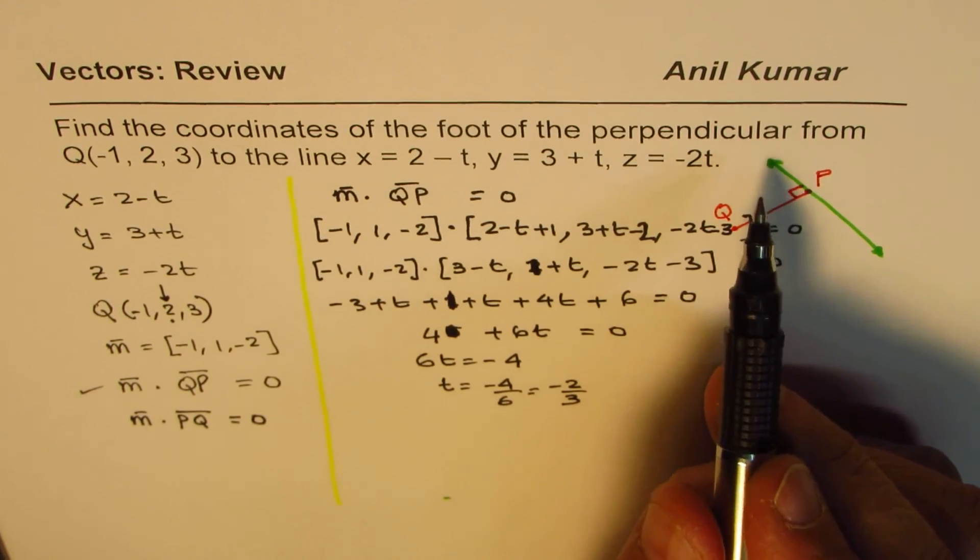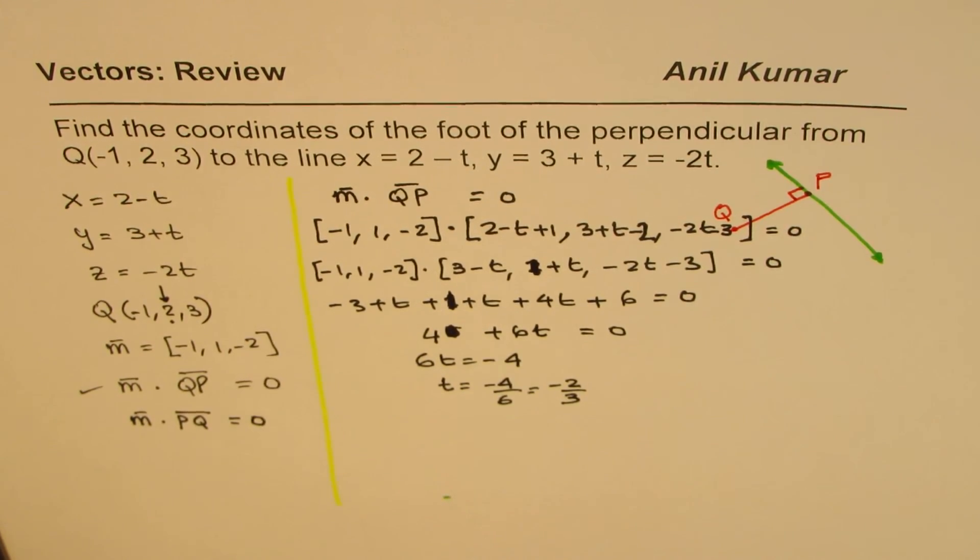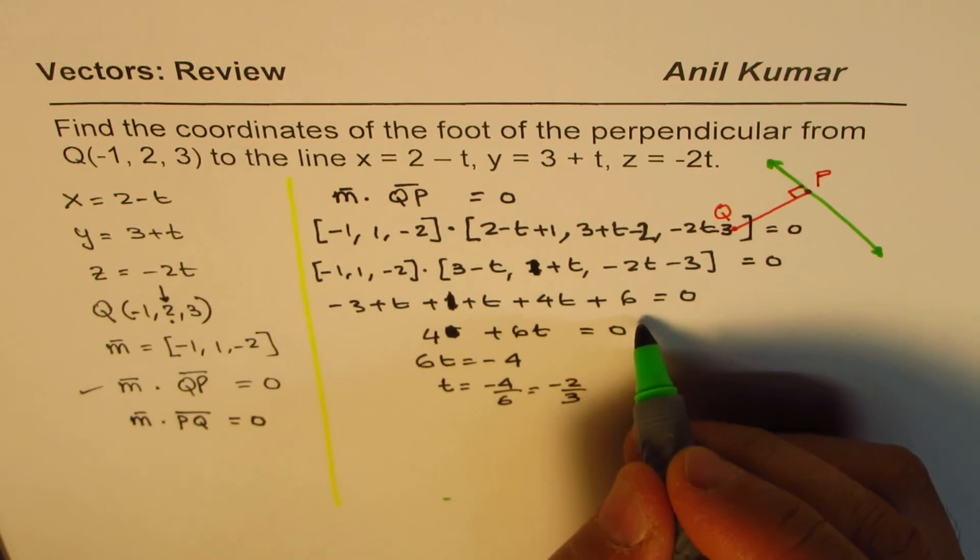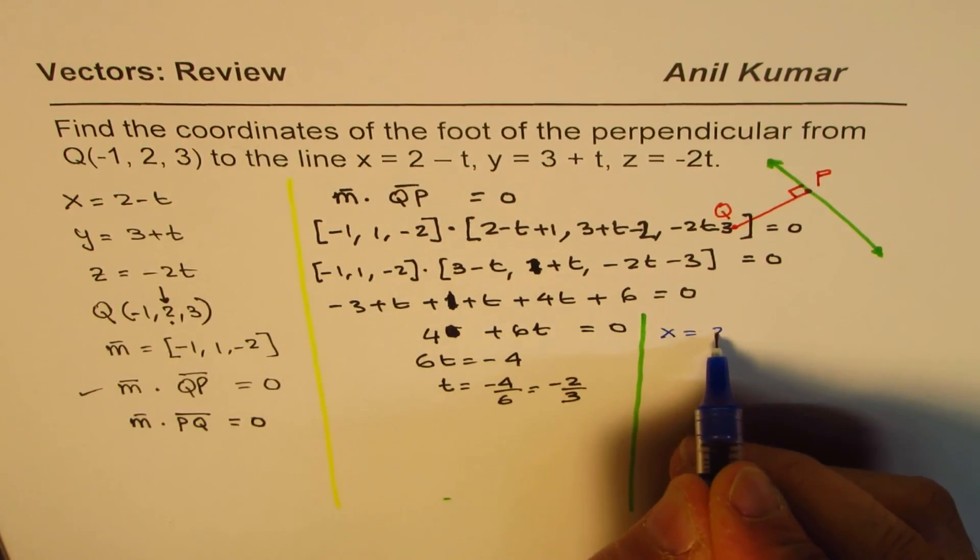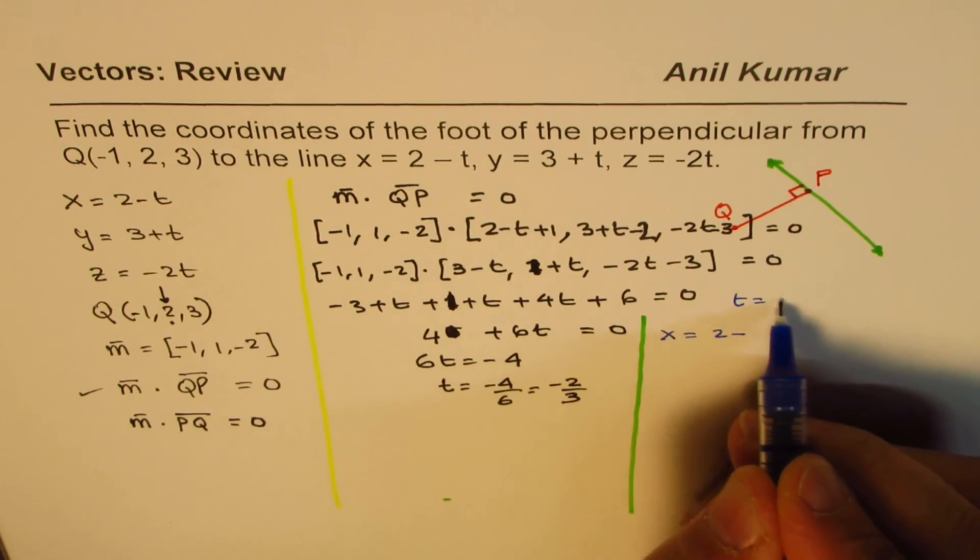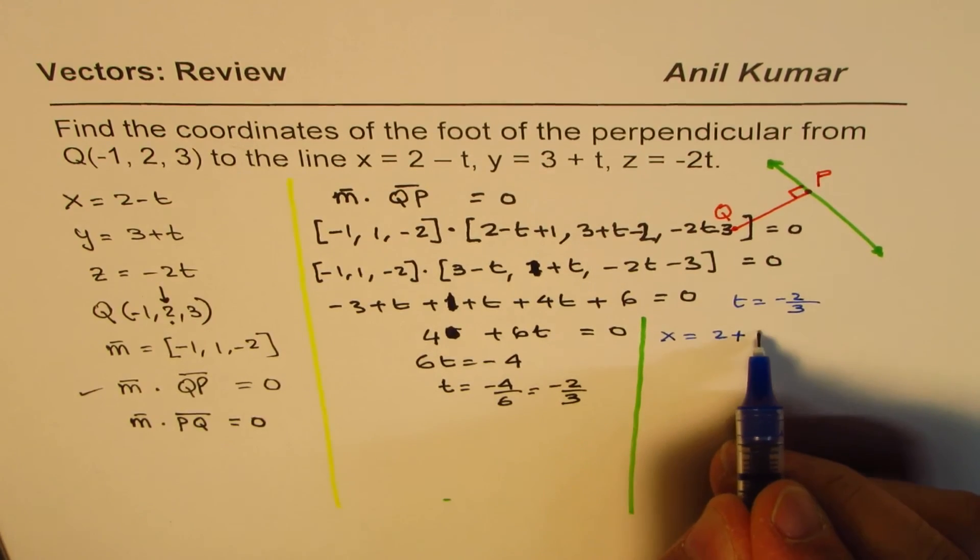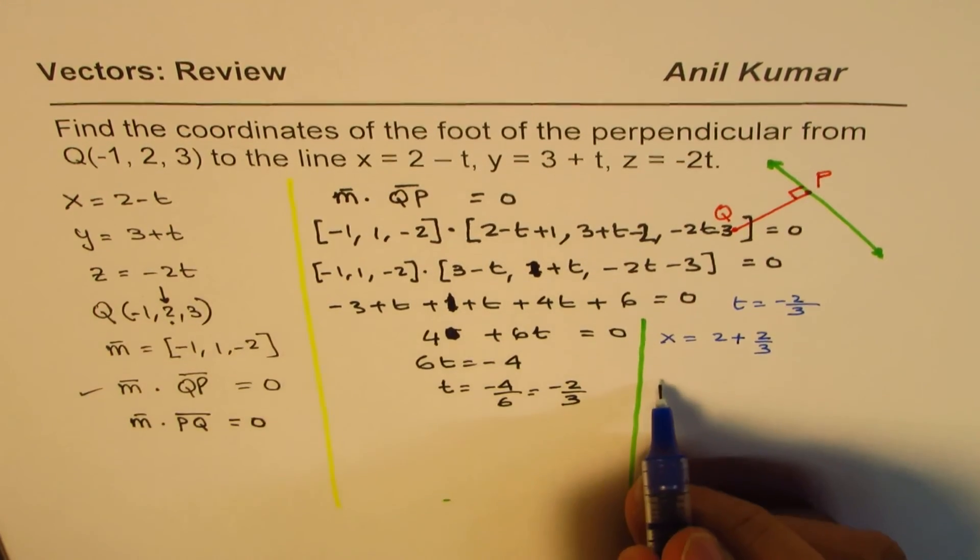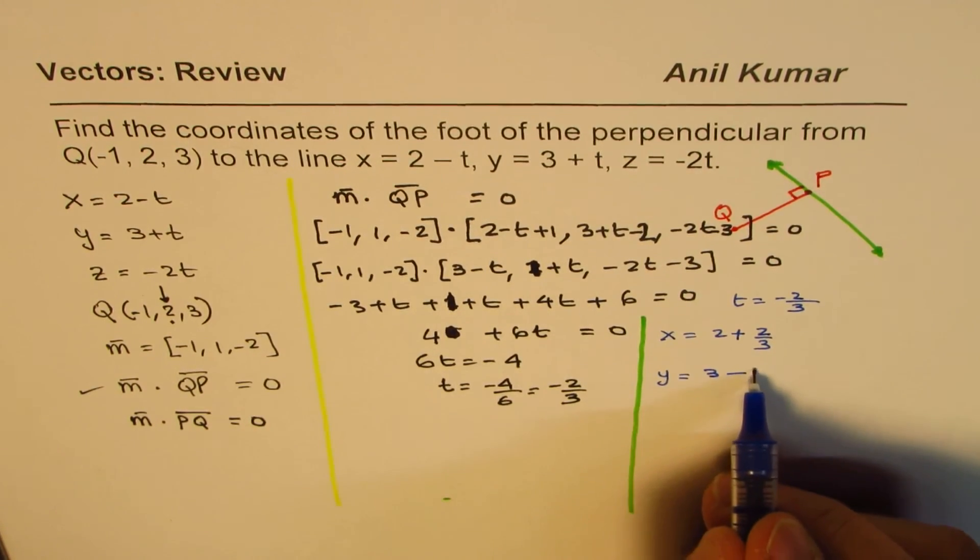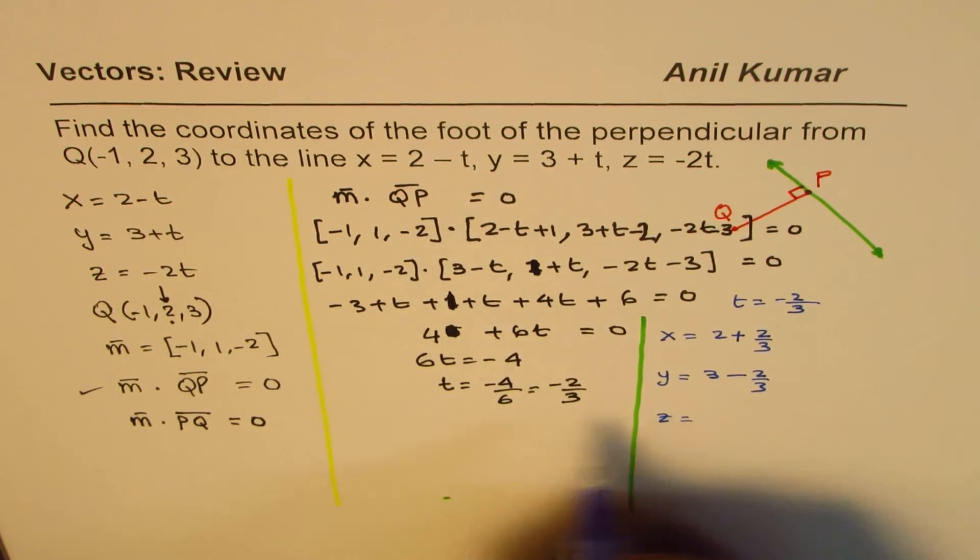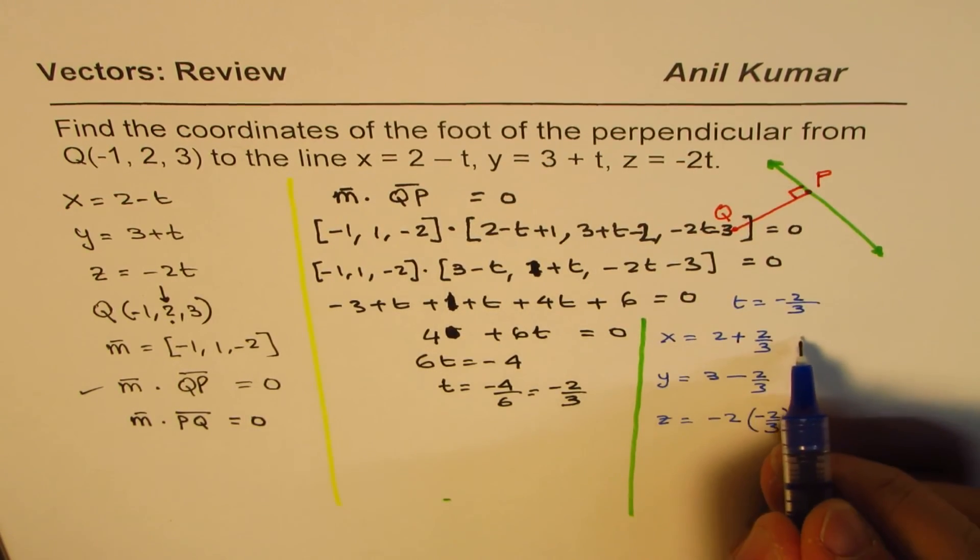So the foot of the perpendicular, we can now get by placing t as -2/3 in our equation. So we'll substitute this in the equation and get the answer. So what we have here is x = 2 - t, and we know t is -2/3 for us. So instead of t, I'll write -2/3. So that makes it plus 2/3. y value will be = 3 + t. So 3 + which is -2/3. And the z value will be -2 times t, which is -2/3.